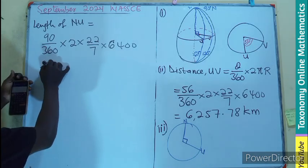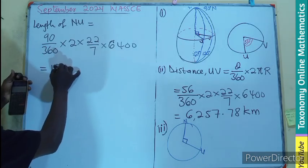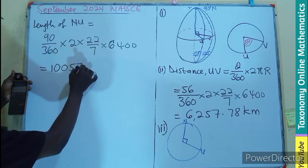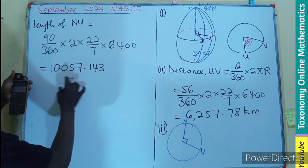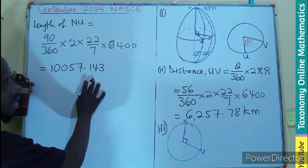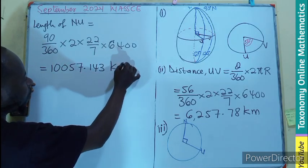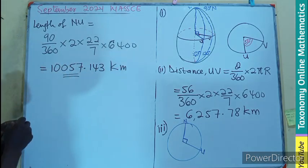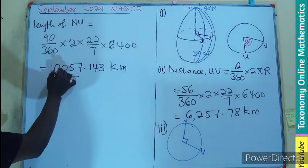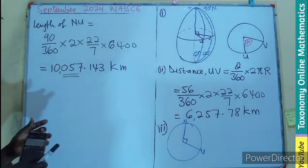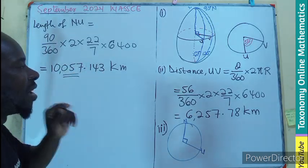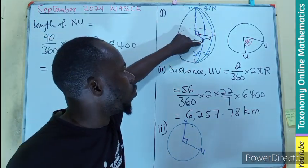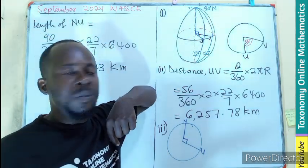So with that, we will be having 10,057.143. Let's leave that in three decimal places, and that will be in kilometers. So 10,057.143 kilometers as the distance of U from the North Pole.